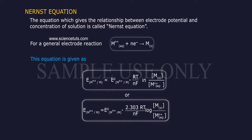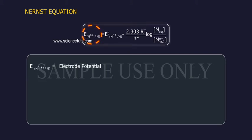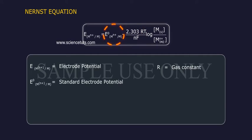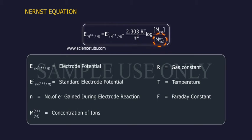Where E(M^(n+)/M) equals electrode potential, R is the gas constant, E°(M^(n+)/M) is the standard electrode potential, T stands for temperature, N stands for number of electrons gained during electrode reaction, F stands for Faraday constant, M^(n+)(aq) stands for concentration of ions, and M(s) stands for concentration of metal.